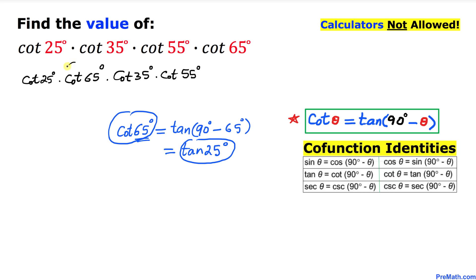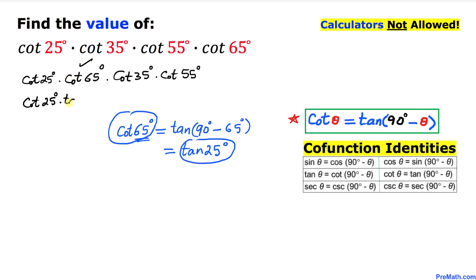Therefore I can replace cotangent of 65 degrees with tangent of 25 degrees. So our expression becomes cotangent of 25 degrees times tangent of 25 degrees times cotangent of 35 degrees.